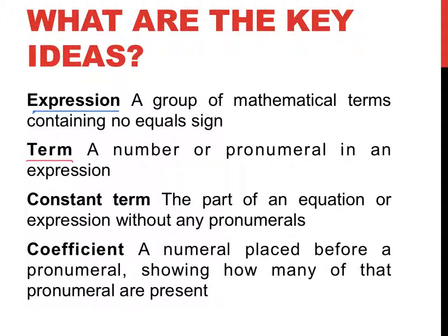It's a number or a pronumeral in an expression. So 2x, 3, 3xy, these are all terms. Now that 3 that I named in those list of terms, the 3 without a pronumeral will be called a constant term.